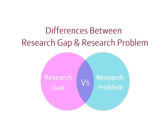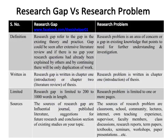Differences between research gap and research problem. Research gap refers to the gap in the existing theory and practice. A gap could be seen after extensive literature review, and if there is no gap, your research questions had already been explained by others and continuing will only result in duplication of work. Research problem is an area of concern or a gap in existing knowledge that points to the need for further understanding and investigation.